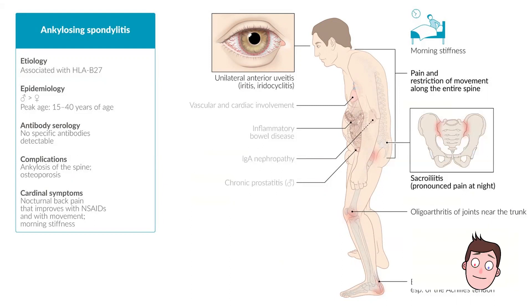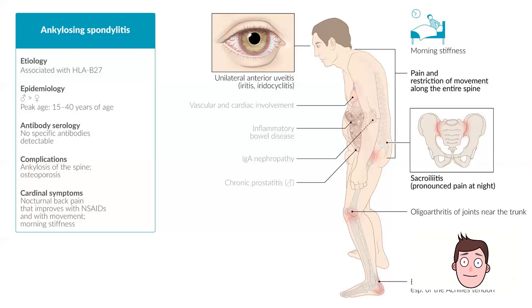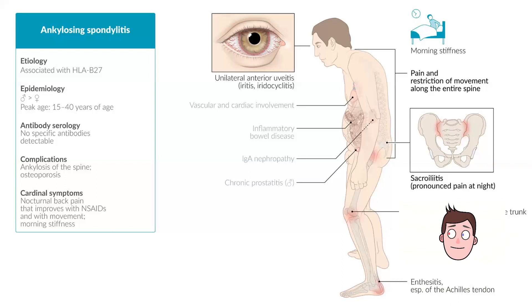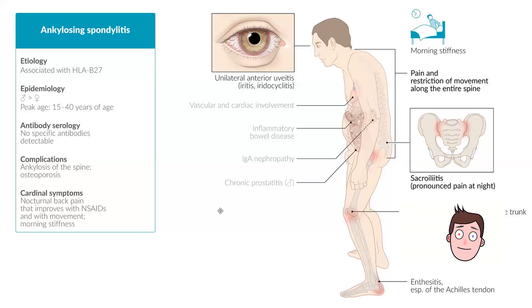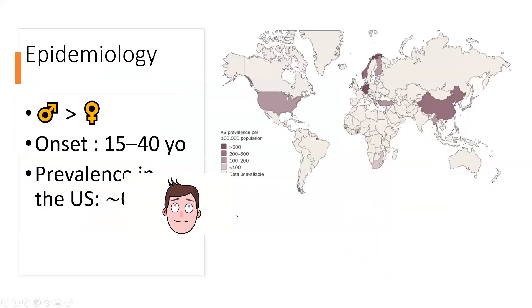We can also see oligoarthritis, where one joint such as the knee or elbow is affected, and enthesitis — inflammation of tendons that connect muscles to bone. The Achilles tendon is one of the commonly affected tendons in this disease.